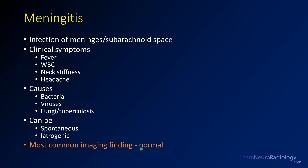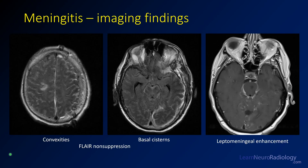The most common imaging finding in meningitis is a normal brain. When you do have imaging findings, on FLAIR imaging you see incomplete suppression — loss of the normal FLAIR suppression over the sulci of the convexity, filled with hyperintense material. Similarly, you see hyperintense material in the lateral cisterns and some extra-axial material. This is a case of iatrogenic meningitis. On post-contrast imaging you see leptomeningeal enhancement along the surfaces of the brain, around the midbrain, and along the quadrigeminal plate cistern.